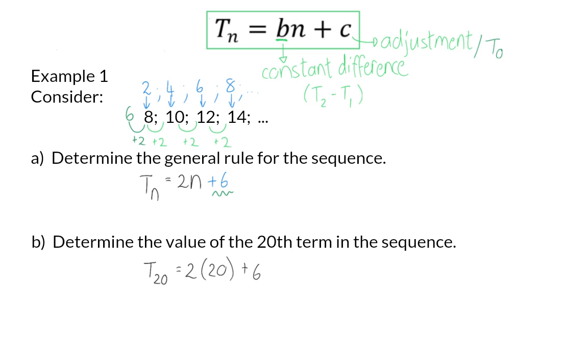So, we have 40 plus 6 and that will give us 46. So, the value of the 20th term in the sequence is 46.